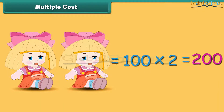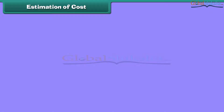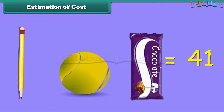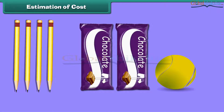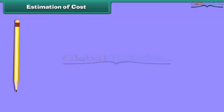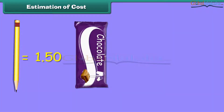A multiple cost is the cost of more than one and is calculated as unit cost multiplied by number of items. Estimation of cost means calculating the total cost of different items. For example, what will be the total cost of four pencils, two chocolates, and one tennis ball, if the unit cost of a pencil is 1 rupee 50 paisa, chocolate is rupees 15, and tennis ball is rupees 5?